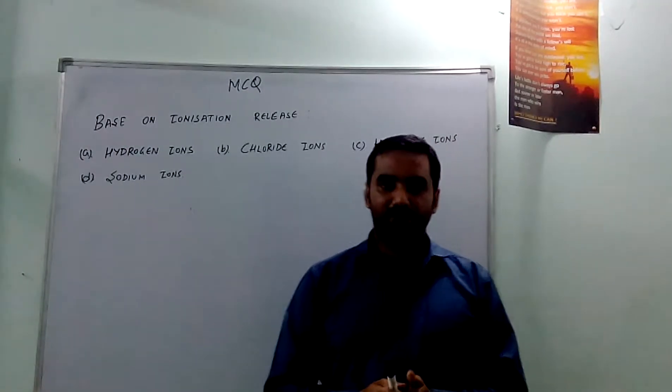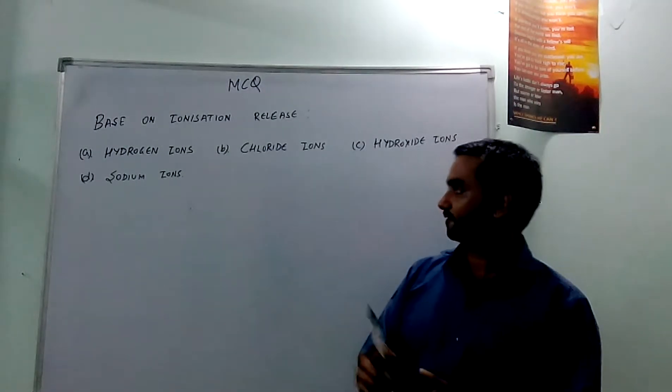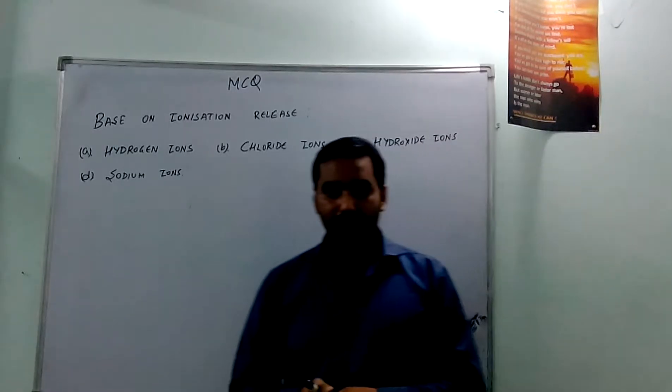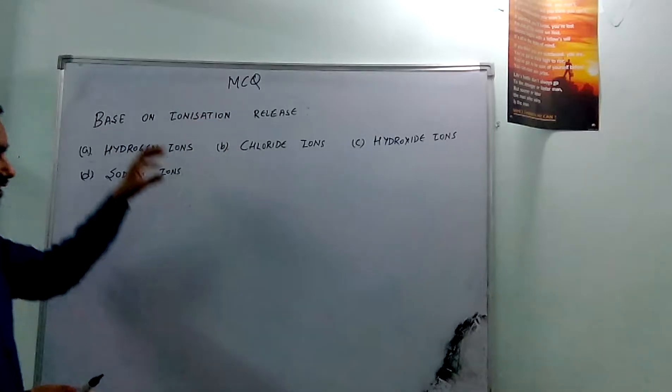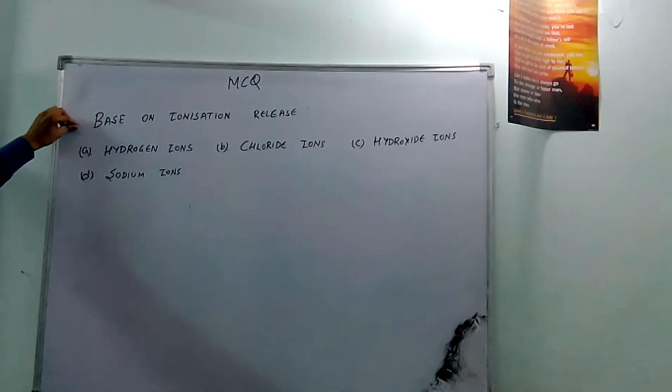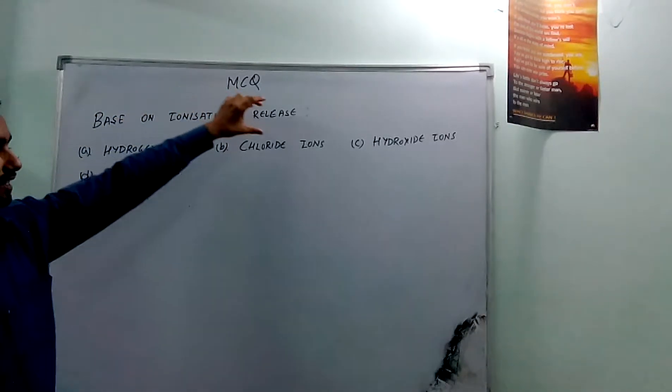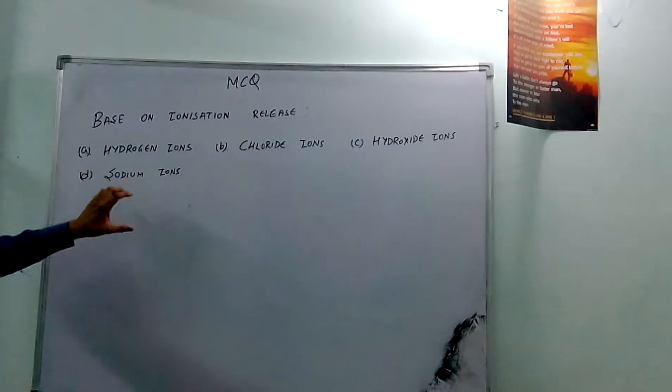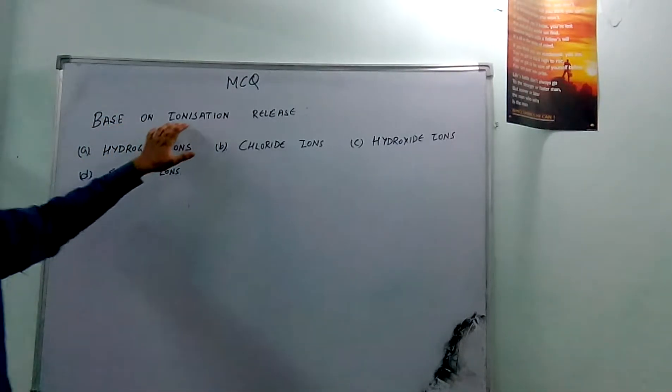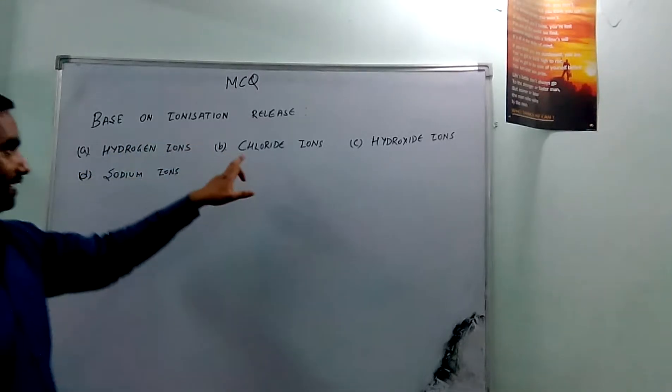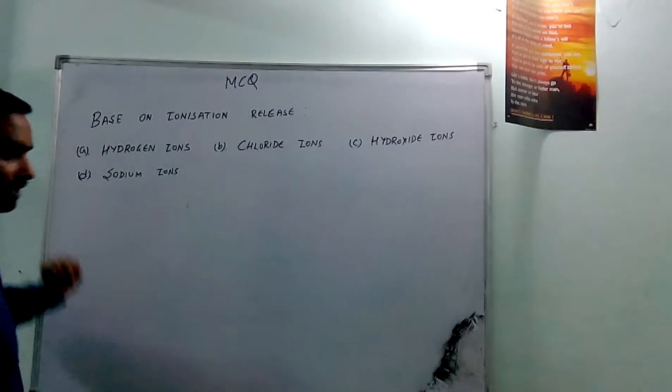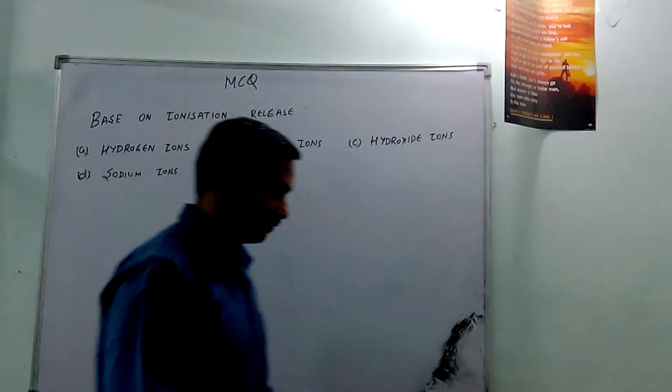Hello friends, welcome to Chemistry Tutorial Patshala. Myself Nitesh, and moving to further questions in the series of multiple choice questions from acid, base, and salt. Our next question is: base on ionization release which ions? On ionization of base, which ions are released? Options are hydrogen ion, chloride ion, hydroxide ion, and sodium ion.